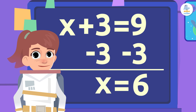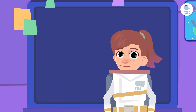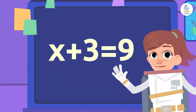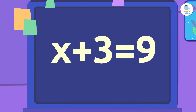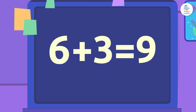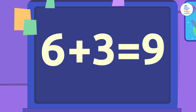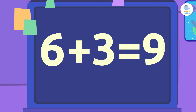Remember to check your work. To see if we solved for x correctly, we can plug the result into the initial equation. Let's try it! Now both sides of the equation have the same value. The equation is equal since 6 plus 3 equals 9. Now we know our work is correct.